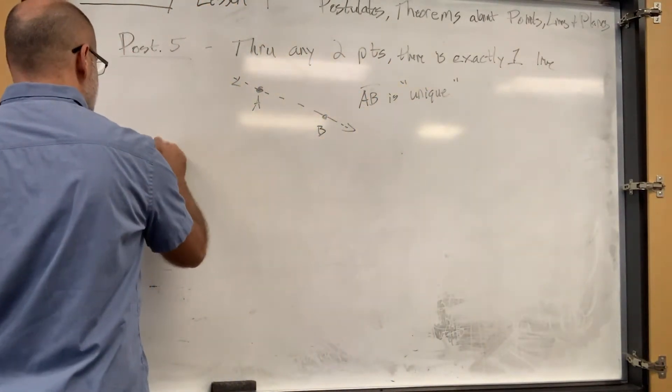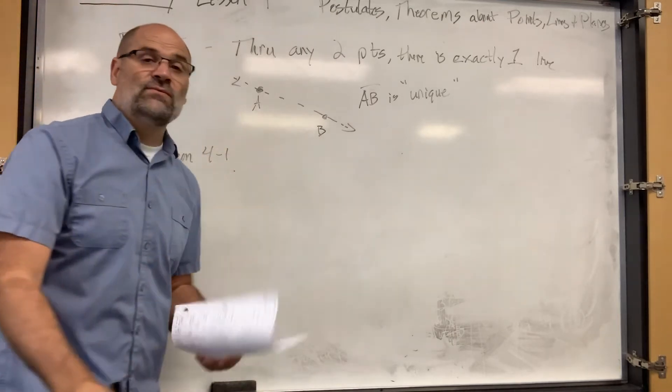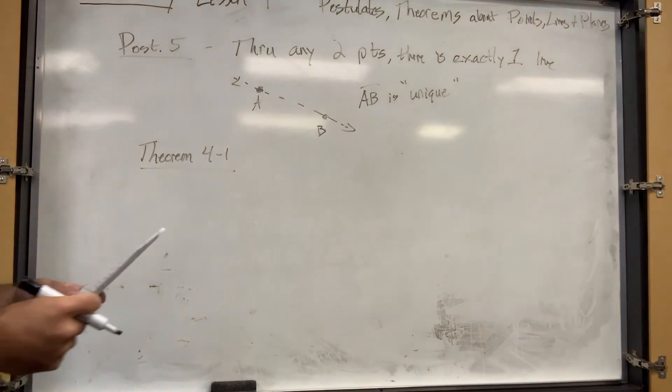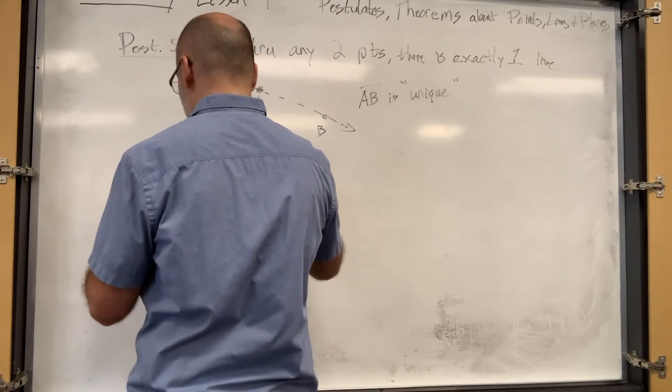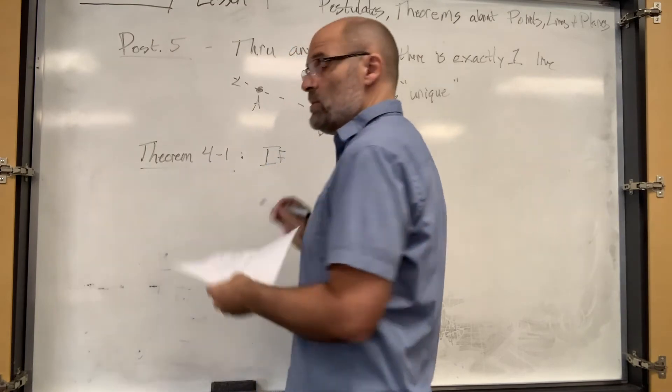Here's a theorem. We call it Theorem 4.1 because it's in the fourth chapter and it's the first theorem. You don't have to necessarily remember these theorem numbers, but if you put the right theorem number down, then you don't have to write it all out. But if you don't remember the theorem number, that's okay, just write the point of the theorem.